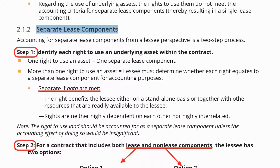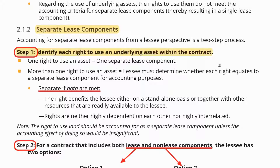What if you have separate lease components — for example, different assets in the same contract? You would need to identify each right to use an underlying asset within the same contract. One right to use an asset equals one separate lease component. For example, if you've entered into a contract with the same party to rent a building, a car, and machinery and equipment, the lease of a building, the lease of a car, and the lease of machinery are three separate leases.